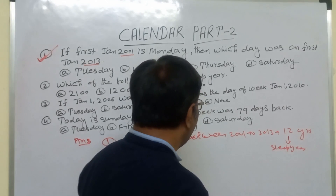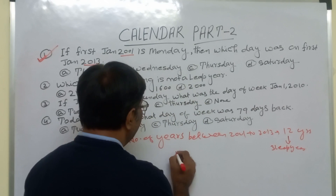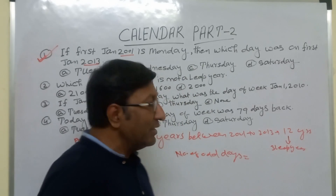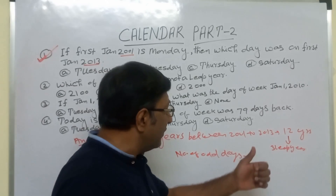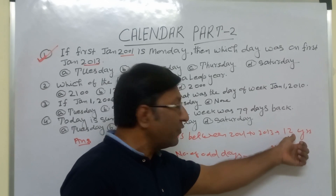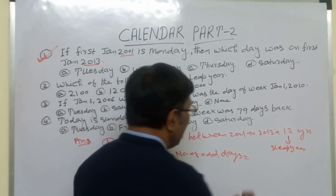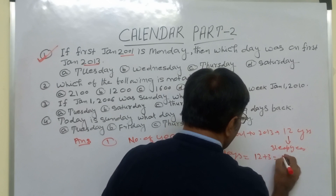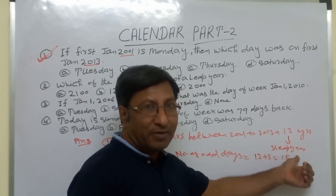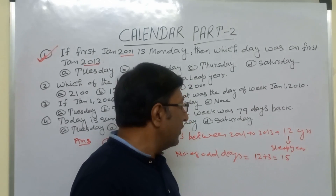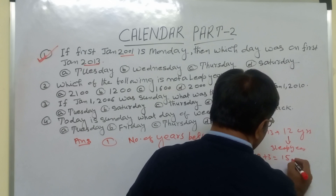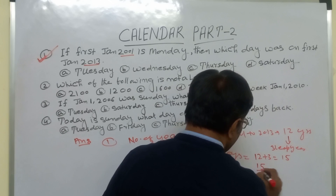The number of odd days in a normal year is 1, and the number of odd days in a leap year is 2. So here we have three leap years and a total of 12 years. We get 12 plus 3 extra days for the leap years, so 12 plus 3 equals 15. That is the total number of odd days. Now divide 15 by 7.